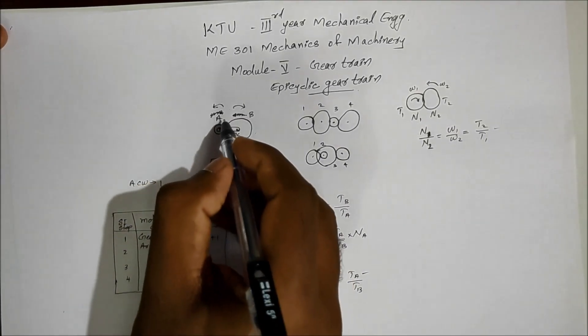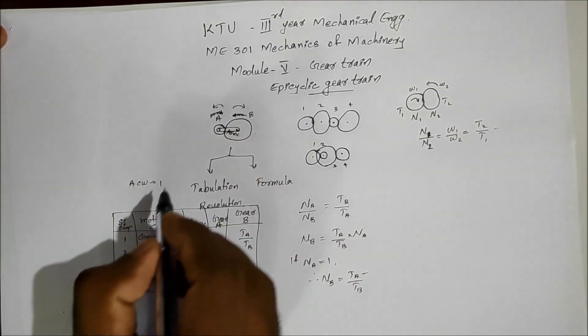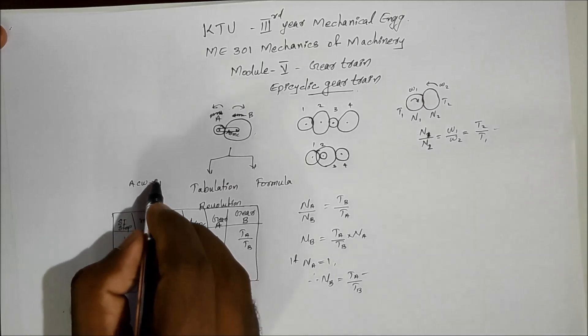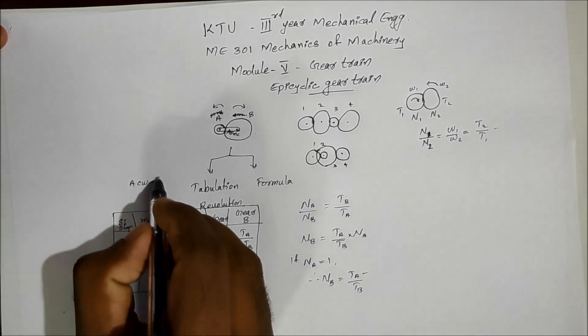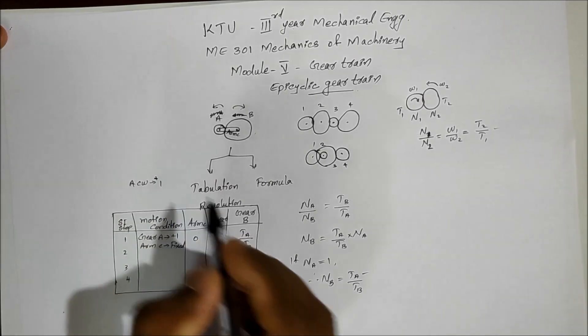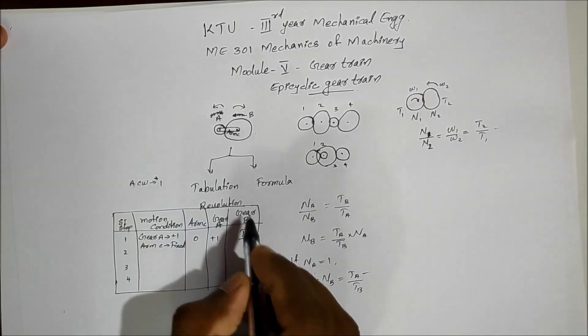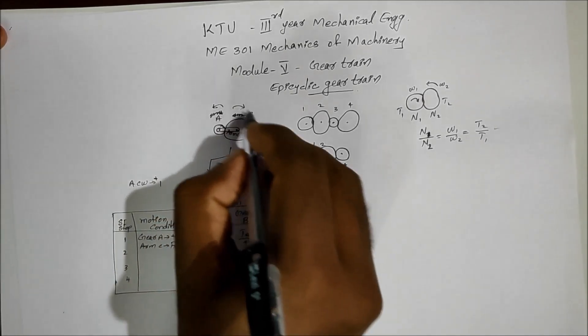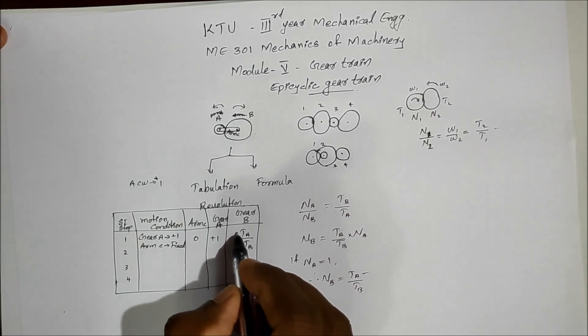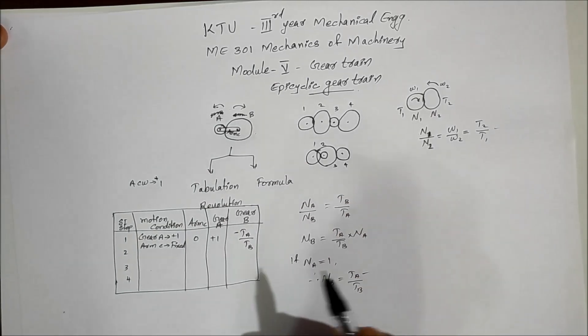For sign convention: Gear A rotating in the anticlockwise direction is taken as positive, and Gear B rotating in the clockwise direction is taken as negative.